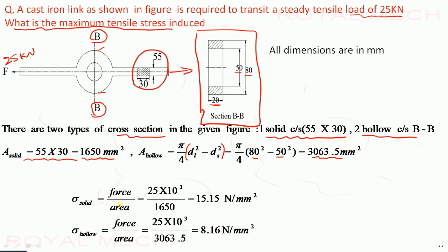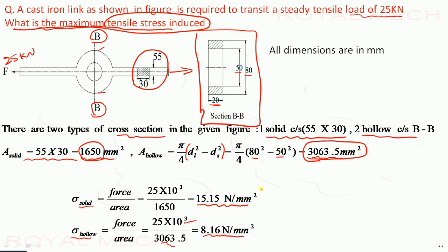Stress equals force upon area. For the solid section: force 25 × 10³ divided by area 1650 mm² gives 15.15 N/mm². For the hollow section: 25 × 10³ divided by 3063.5 mm² gives 8.16 N/mm². The question asks for the maximum tensile stress induced. From these two answers, the maximum tensile stress induced is 15.15 N per millimeter square.